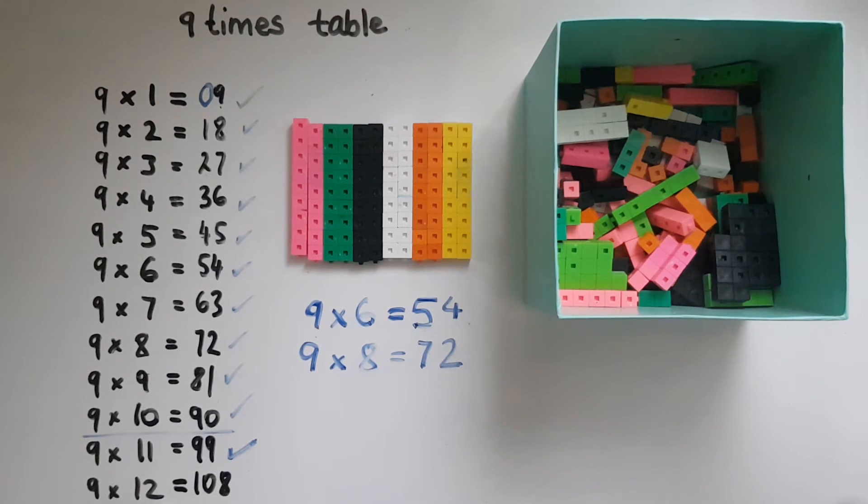9 times 12: we can break this down into 10 and 2. So 10 times 9 is 90. 2 times 9 is 18. Add them together, it gives us 108. Or go to 9 times 11, which is 99, and add another 9, which gives us 108.